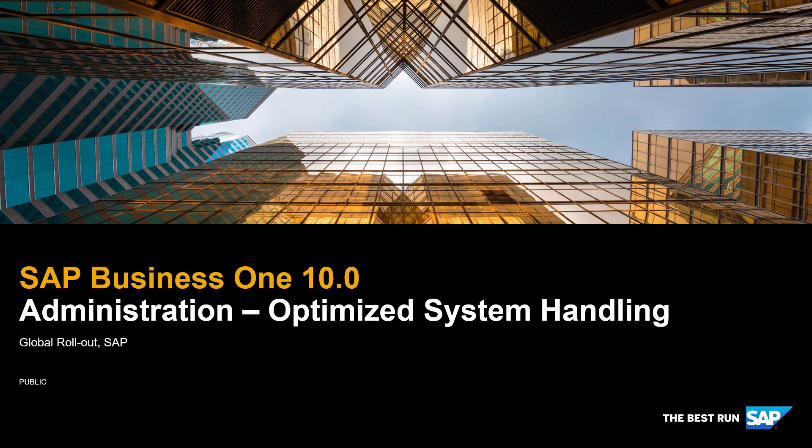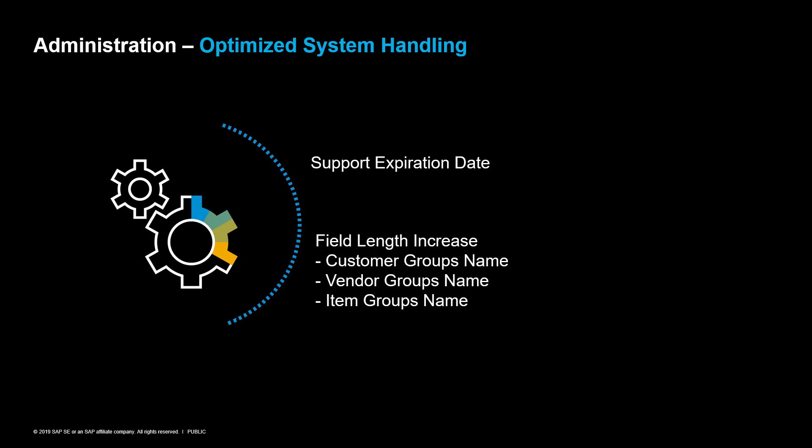SAP Business One 10.0 Administration: Optimized System Handling. We would like to introduce a couple of optimizations in the Administration System Handling — the support expiration date and the field length increase in business partners customer and vendor groups and item groups.